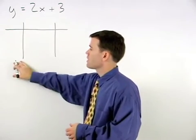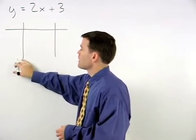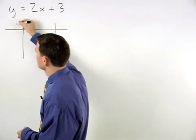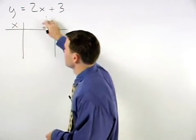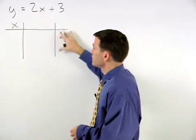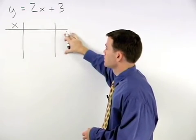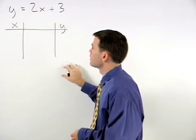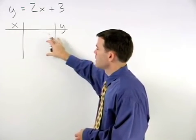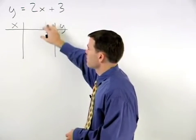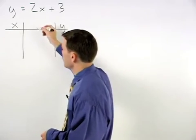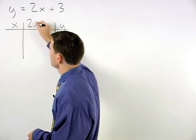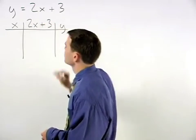Down the left side of the chart, we have our different values for x that we'll be plugging into the equation. Down the right side of the chart, we have our different values for y that we end up with. And in the middle, we have the side of the equation that contains the x, in this case 2x plus 3.